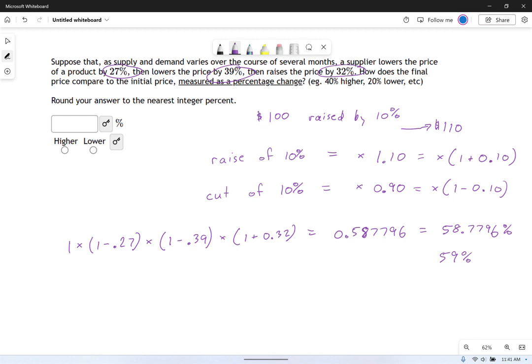Now, here's one last trick to the problem. That may be the answer, but if you look at what they're asking, how does the final price compare to the initial price measured as a percentage change? That measured as a percentage change right there. This thing is measured as a percentage change. That's a really important phrase because I'm not going to say it's 59% of the original. That's true, but that's not a percentage change. I'm going to say it lowered by, let's see, 100 minus 59. That's going to be lower. Lowered by 41%.